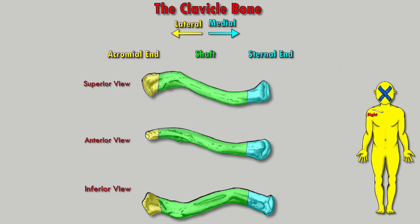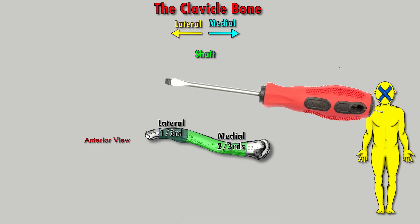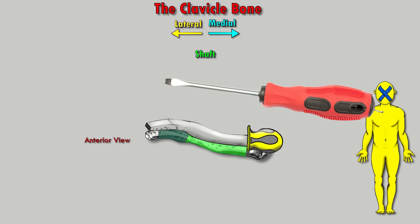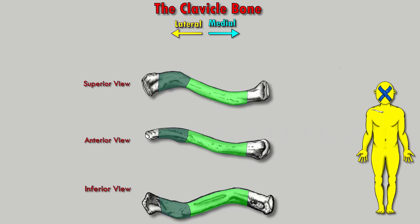In the middle we have the shaft — the body of the clavicle. The shaft is divided into two parts: the lateral one-third and the medial two-thirds. The lateral end is flat and the medial end is round, kind of like a flat-headed screwdriver — which is actually a good way to remember that the lateral end is flat, because it looks like a dysfunctional flat-headed screwdriver.